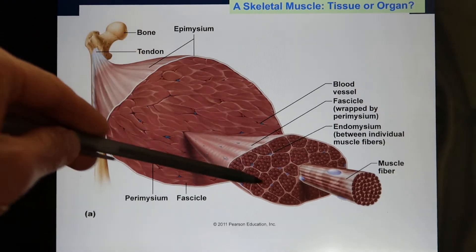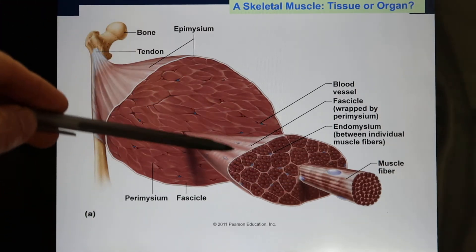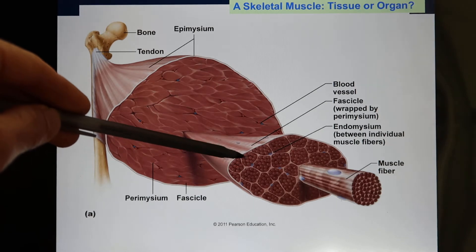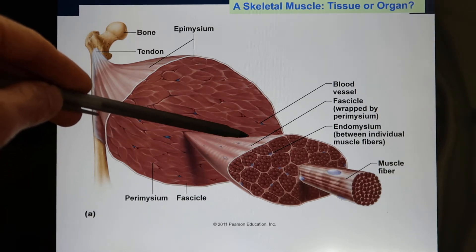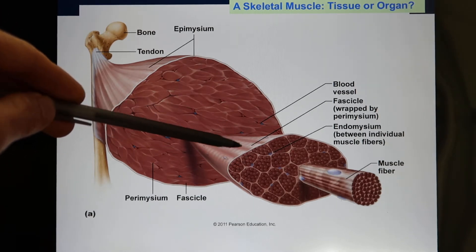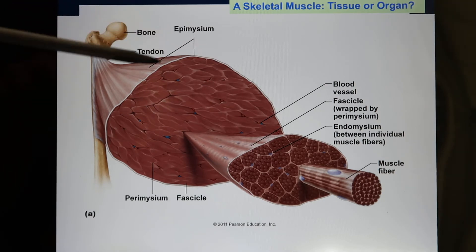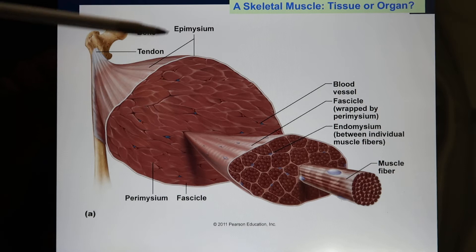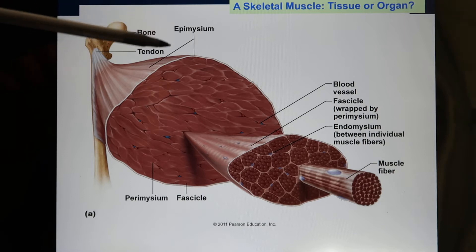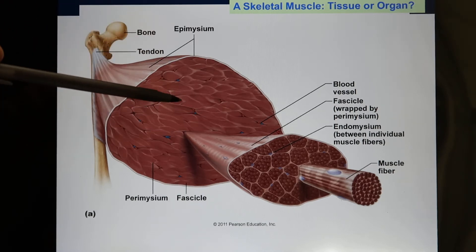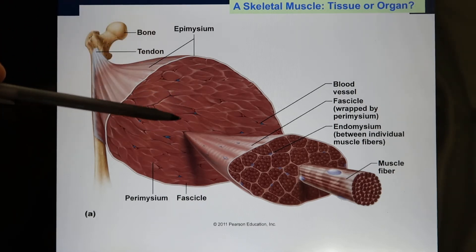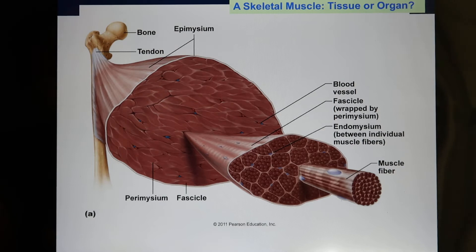You put a lot of fascicles together, surround them with the perimysium, and now you have a big muscle. The epimysium is the connective tissue covering. Inside the muscle you have blood vessels and nerves. So by definition, if I give you a big muscle, it's actually an organ.